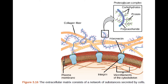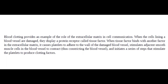Figure 3.16. The extracellular matrix consists of a network of substances secreted by cells. Blood clotting provides an example of the role of the extracellular matrix in cell communication. When the cells lining a blood vessel are damaged, they display a protein receptor called tissue factor. When tissue factor binds with another factor in the extracellular matrix, it causes platelets to adhere to the wall of the damaged blood vessel, stimulates adjacent smooth muscle cells in the blood vessel to contract, thus constricting the blood vessel, and initiates a series of steps that stimulate the platelets to produce clotting factors.